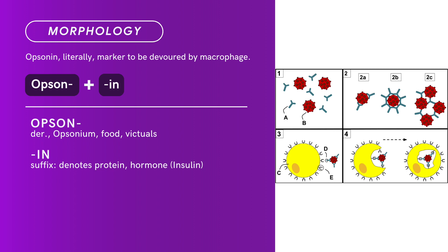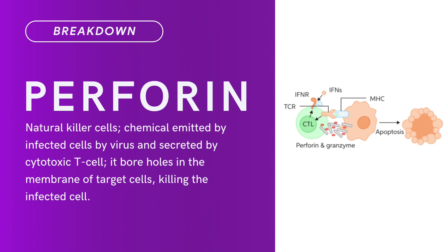Compound of opson plus in. Opsonin is derived from opsonium, meaning food. In is a suffix denoting protein or hormone, as in insulin. There you have it — compound term opsonin.